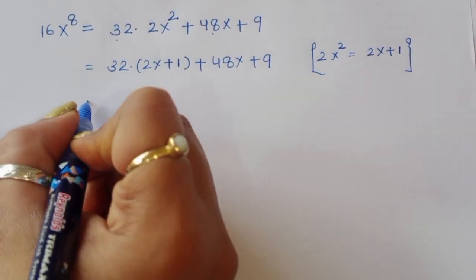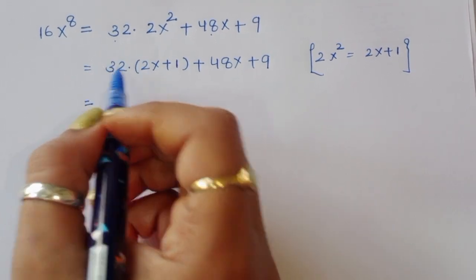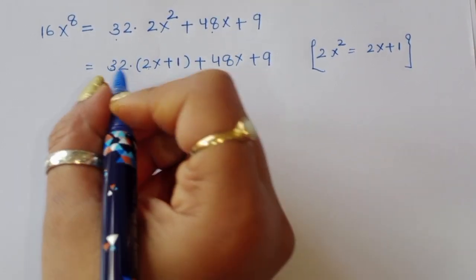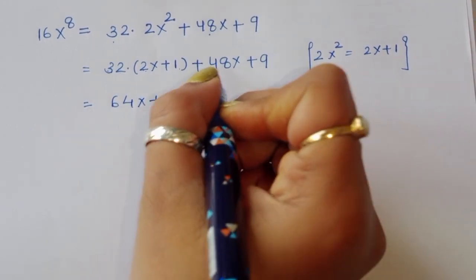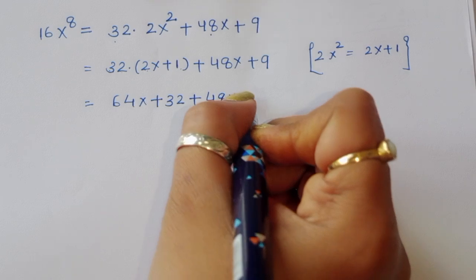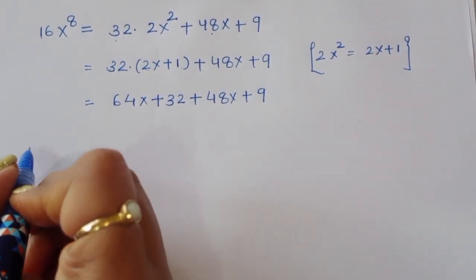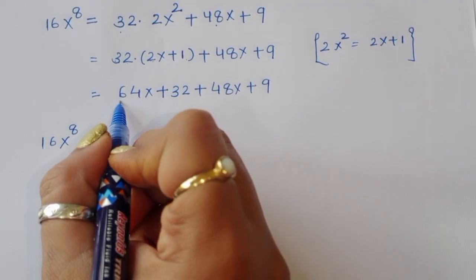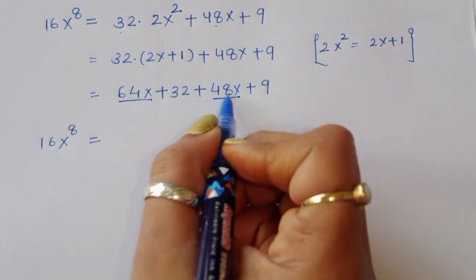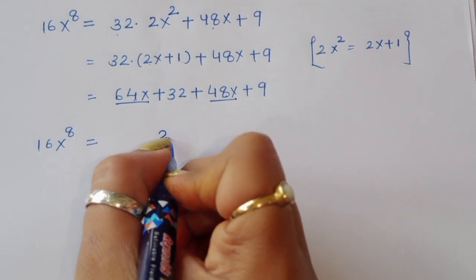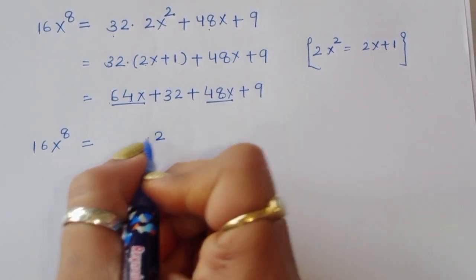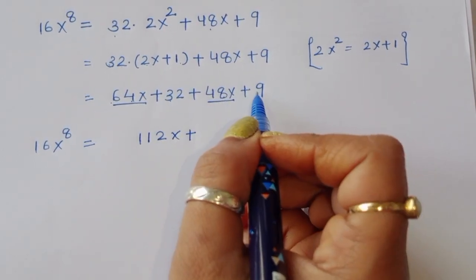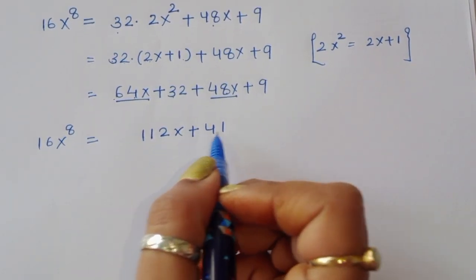Substituting, 16x power 8 equals 32 times (2x plus 1) plus 48x plus 9, which gives 64x plus 32 plus 48x plus 9. Adding like terms: 64x plus 48x equals 112x, and 32 plus 9 equals 41. So 16x power 8 equals 112x plus 41.